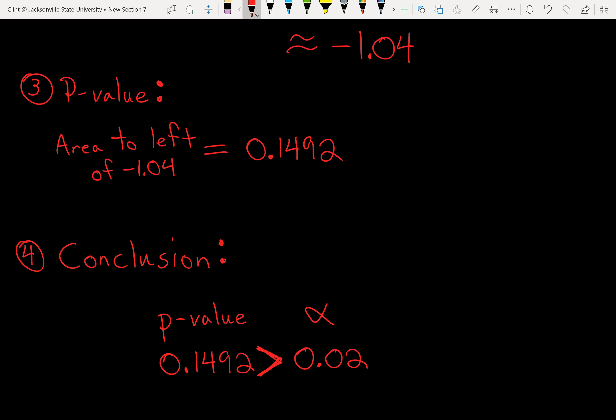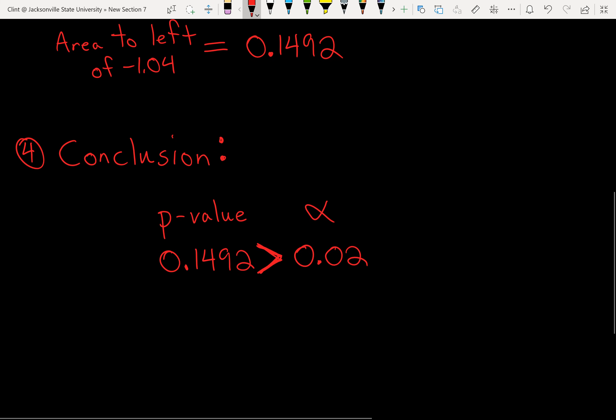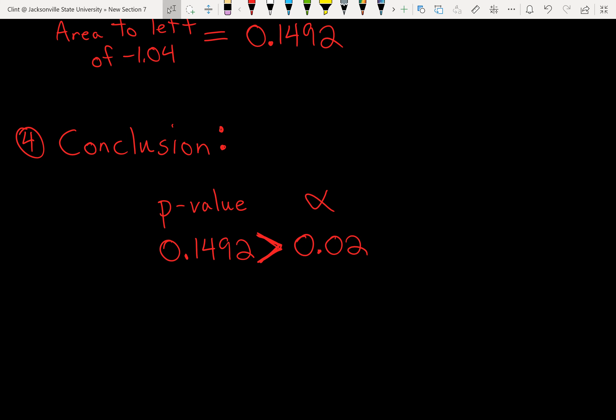So if our p-value is low, we reject the null hypothesis, but here it's not. Our p-value is greater than alpha. So we fail to reject the null hypothesis because our p-value is too big, too much of a chance of a type 1 error. We fail to reject the null hypothesis. So what does that mean? That means we do not have enough evidence. There is not sufficient evidence to support the claim.